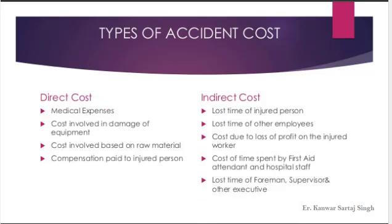Types of accident cost. First is direct cost. Whenever an accident occurs it is always a costly affair. Direct costs include medical expenses, cost involved in damage of equipment, cost involved based on raw material, and compensation paid to the injured person. These direct costs are visible and mandatory to be incurred by the company.